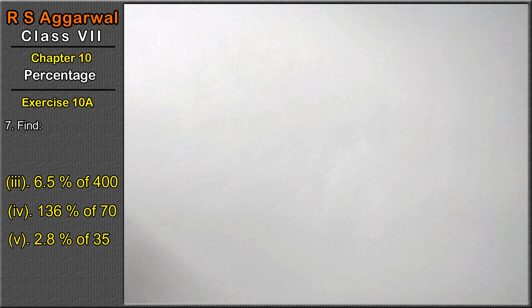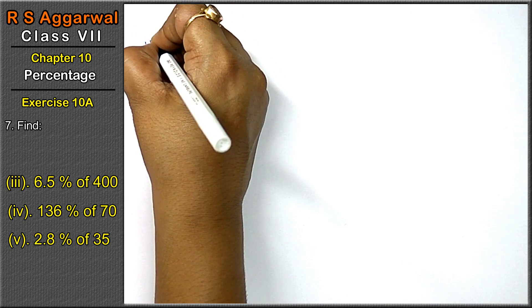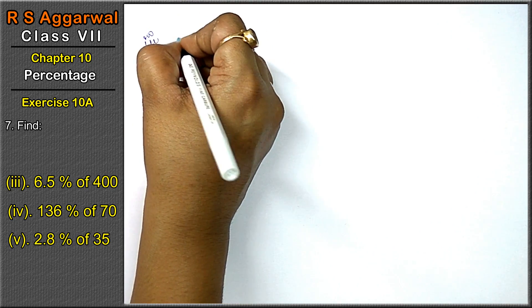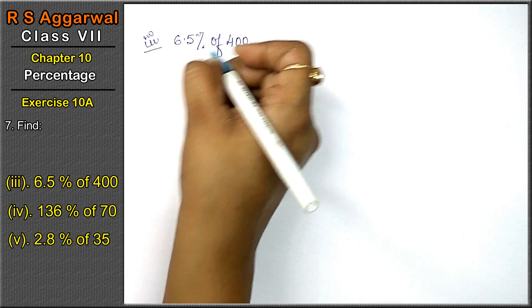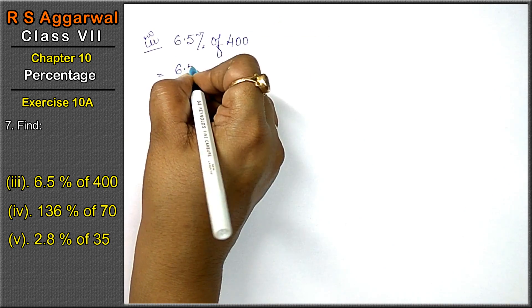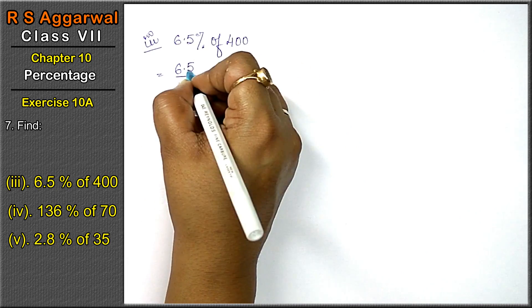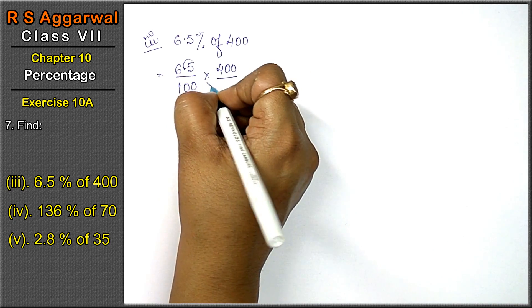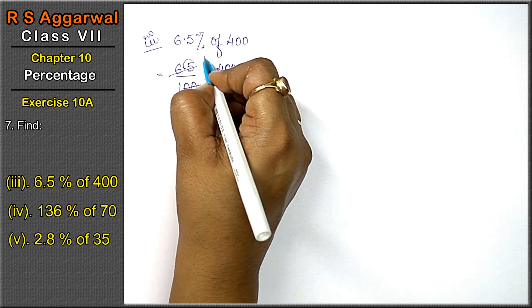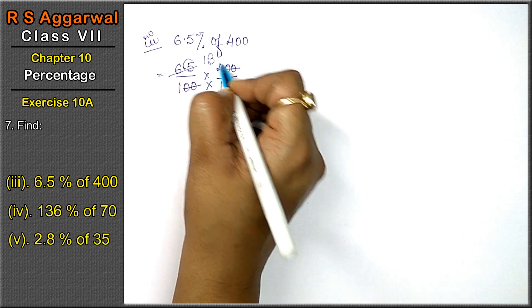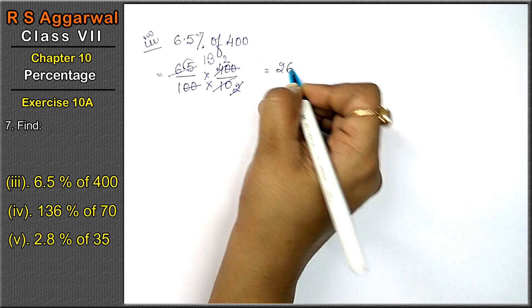Let's do the third part. Third part is 6.5 percent of 400. 6.5 percent means 6.5 upon 100, into 400. We remove the decimal point and multiply below by 10. The two zeros cancel. 5×1 is 5, 5×3 is 15, 5×2 is 10, 2×1 is 2, 2×2 is 4. That means 26 is the answer.